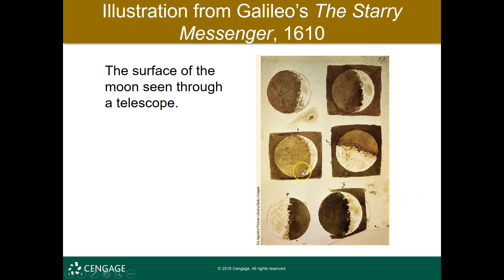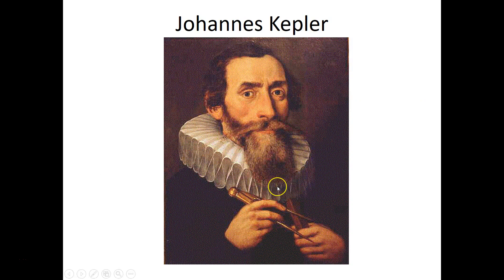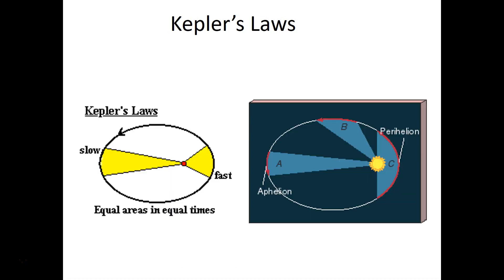Galileo also took a great deal of time studying the moon — something all of us can see with our naked eyes — and it's not perfect. Galileo is starting to chip away at some of these accepted ideas. Kepler uses a ton of Brahe's observational data, puts the mathematics to it, and comes up with observations that these bodies, the planets especially, aren't moving in perfect circles. They're speeding up and slowing down, and he can prove that mathematically, though he doesn't really exactly know why.